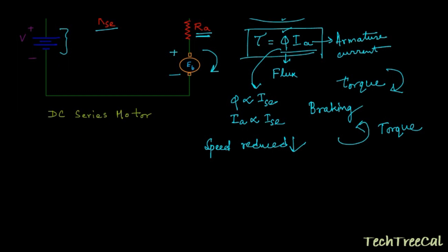For generating a torque opposite to the direction in which the motor is rotating, what we need to do is either reverse the direction of the armature current — that is, use negative Ia — or reverse the direction of the flux.